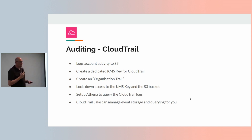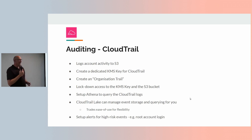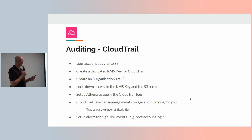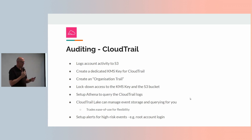You can set up Athena to query CloudTrail logs — go into the AWS console, write an SQL query, and get insights into what people have been doing. There's also CloudTrail Lake, which manages event storage and querying for you rather than manual setup — it trades flexibility for ease of use. You can set up alerts for high-risk events, such as root account login, which obviously no one should ever do. You can send alerts to a notifications topic, Slack, PagerDuty, whatever. You can set up alerts for pretty much anything — for example, if someone spins up an EC2 instance in a region you don't want.